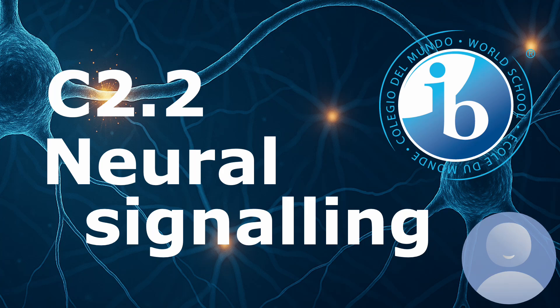Hello everyone and welcome to the seventh student. Today we're doing C2.2, which is neural signaling in IB biology. So let's get started.